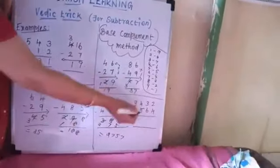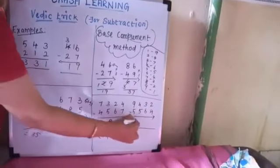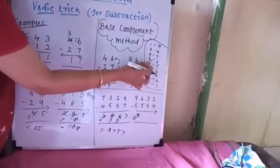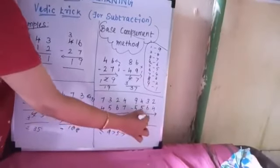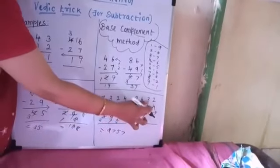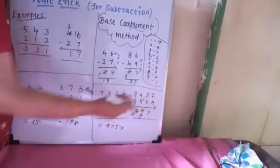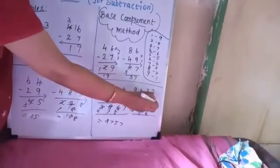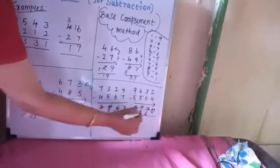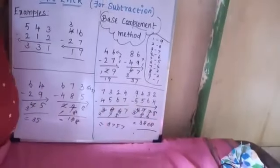Last example — again 4-digit subtraction. Start left to right. 9 minus 5 is 4. Then complement needed; complement of 5 is 5, 5 plus 4 is 9 — reduce to get 3. Complement of 6 is 4; 4 plus 3 is 7 — reduce immediately. Complement of 4 is 6; 6 plus 2 is 8. The answer is 3,868. Hope you understand. Thank you.